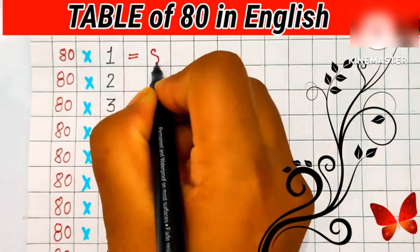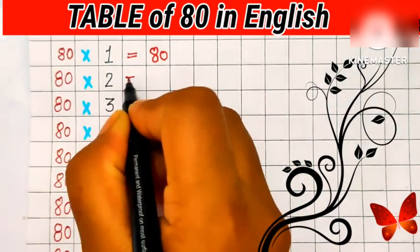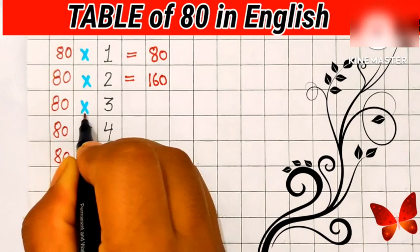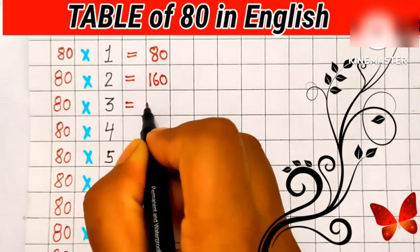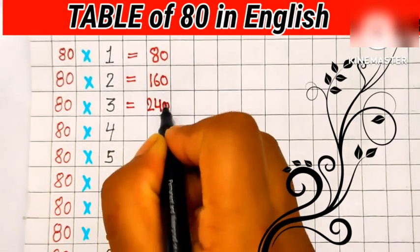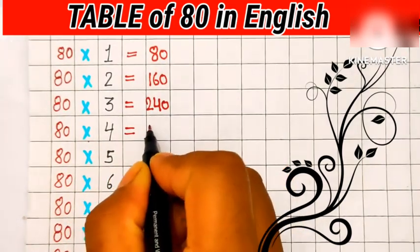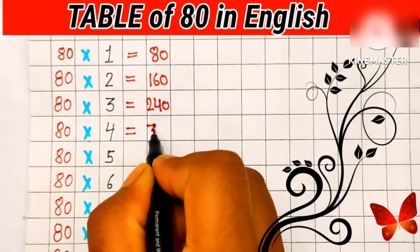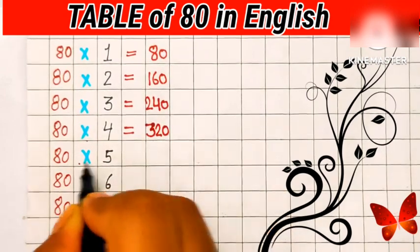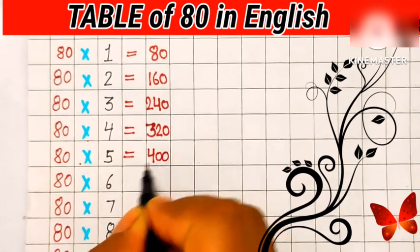81's are 80. 82's are 160. 83's are 240. 84's are 320. 85's are 400.